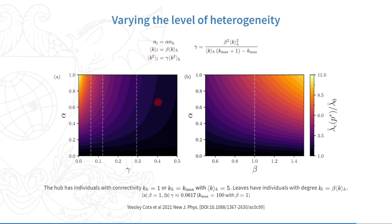In A, as we decrease gamma, the hub becomes more heterogeneous than the leaves, and the detrimental effects become stronger.